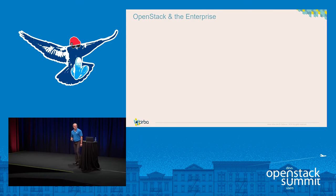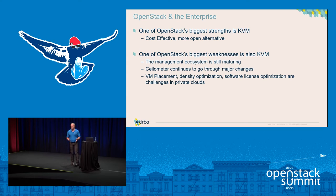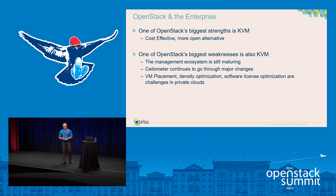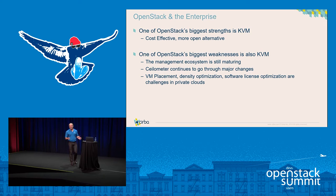Today I'm specifically going to focus on OpenStack and the enterprise. One of OpenStack's biggest strengths is KVM — it's cost effective and an open alternative. One of its biggest weaknesses is also KVM, and I could say this about any of the different hypervisors, whether it be VMware, PowerVM, or Hyper-V. The management ecosystem in KVM is still maturing, and Ceilometer, the technology we use to go and get the data, is still going through major changes with every single release.